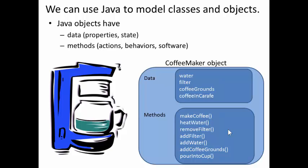But there are also methods associated with a coffee maker object. For example, one obvious one is to make coffee. But a coffee maker can also heat water. Other actions are, we can remove the filter, add the filter, add water, add coffee grounds, and pour into a cup.